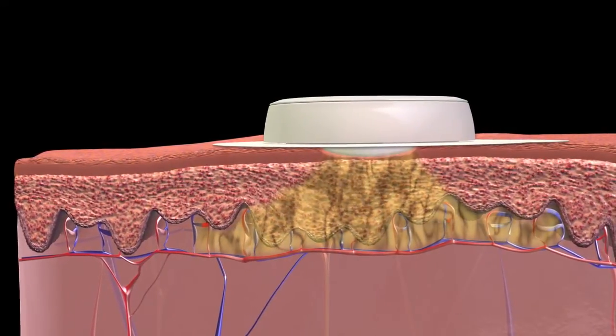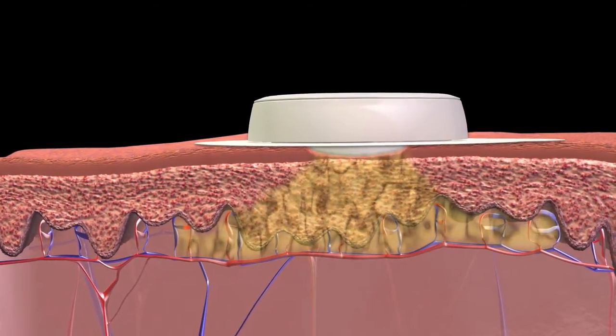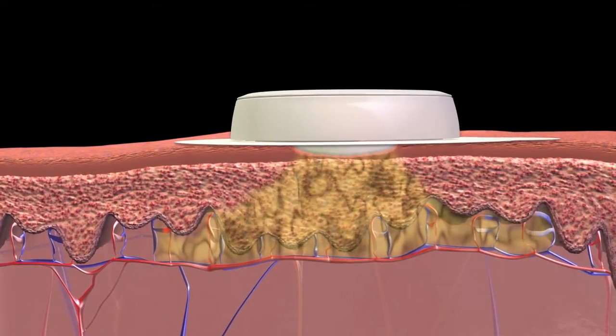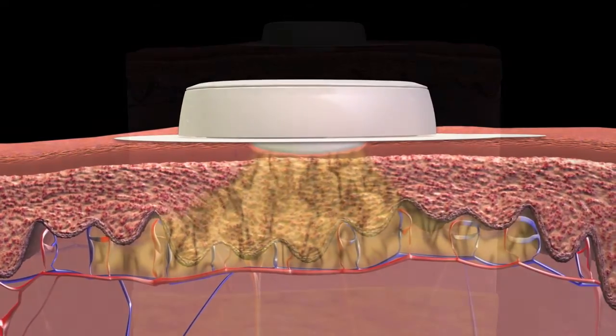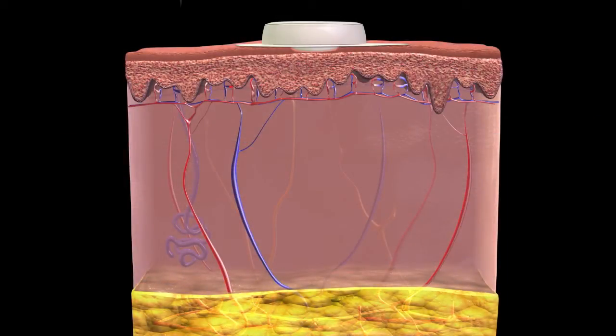Symfony measures interstitial glucose levels using glucose oxidase, similar to other commercially available glucose monitors and lab analyzers. Some sensors require needle insertion into the subcutaneous area. Symfony's non-invasive approach does not require a needle.